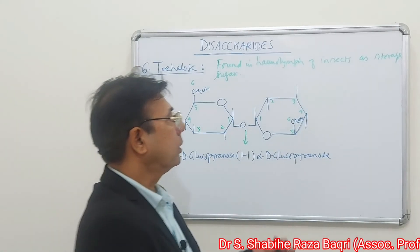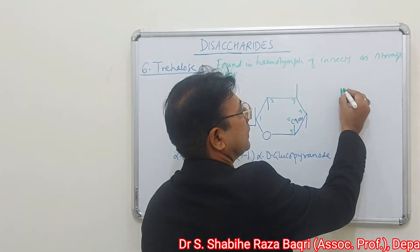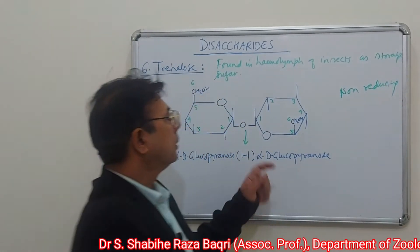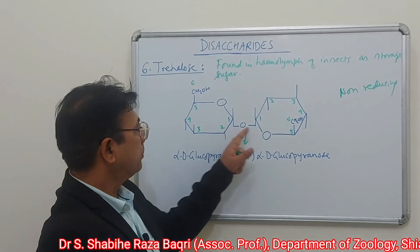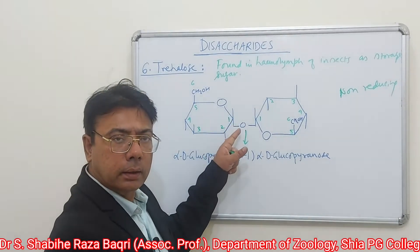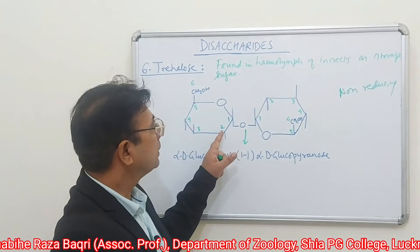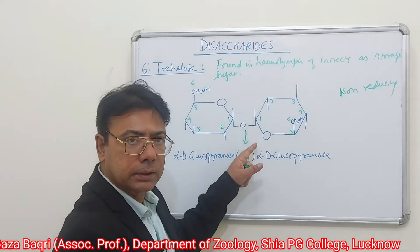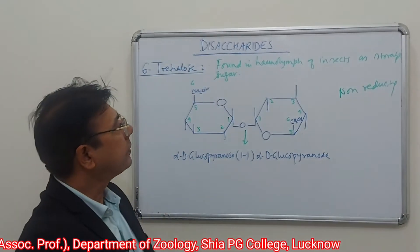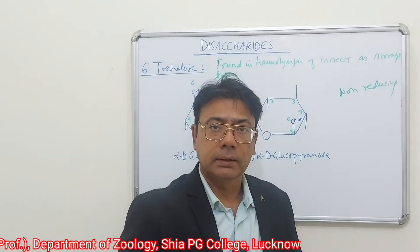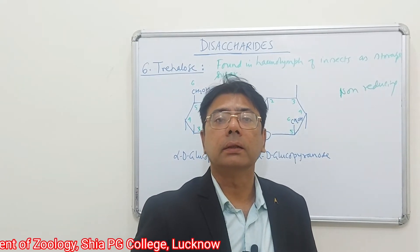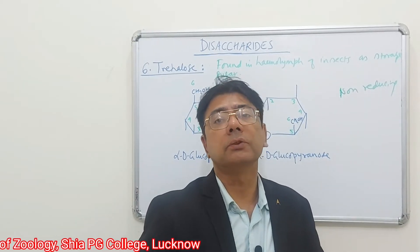The last disaccharide is trehalose, which is also a non-reducing sugar. It is non-reducing because in both glucose molecules, carbon one — the carbonyl carbon — is trapped in bond formation. It is found in the hemolymph of insects, where its role is to act as a source of stored energy.